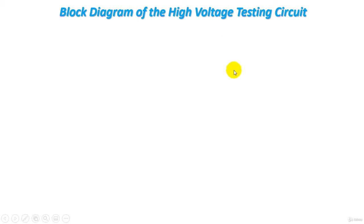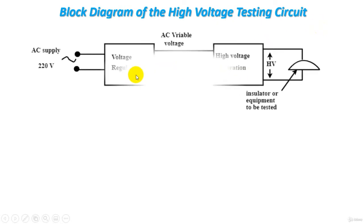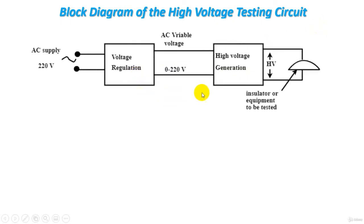Hello everyone. Now let's understand the block diagram of the high voltage testing circuit that's used to produce high voltage in a high voltage testing lab. This is the block diagram of the high voltage testing circuit.